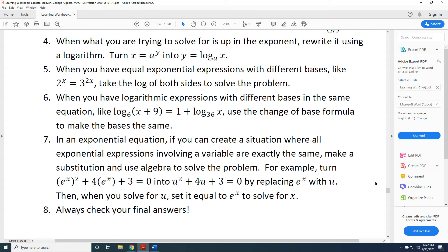Tip seven, in an exponential equation, if you can create a situation where all exponential expressions involving a variable are exactly the same, make a substitution and use algebra to solve the problem. For example, turn (e^x)^2 plus 4(e^x) plus 3 equals 0 into u squared plus 4u plus 3 equals 0 by replacing e^x with u. Then, when you solve for u, replace that u with e^x to solve for x. This method is referred to as u substitution.